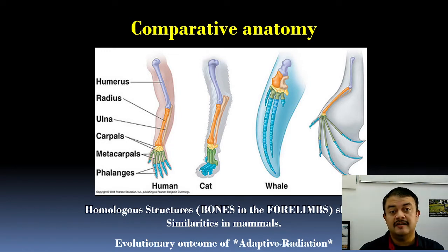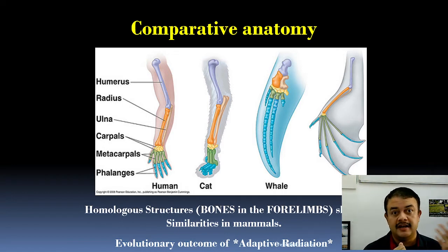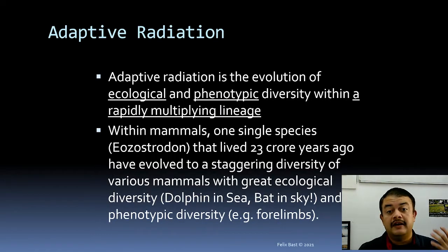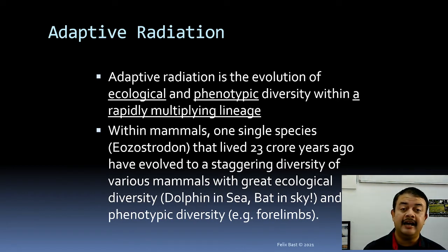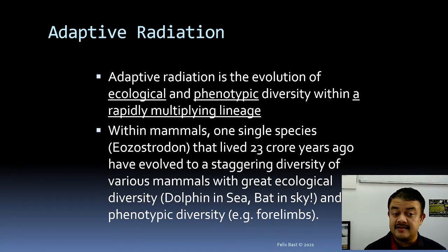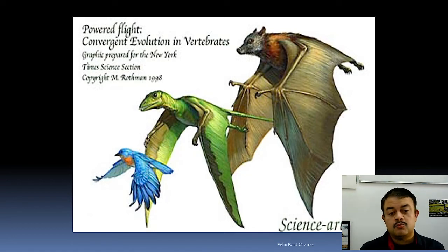In comparative anatomy we look for homologous structures and distinguish them from analogous structures. For example, the bones of four limbs across all vertebrates show similarities in mammals — this is because of adaptive radiation: the splitting into completely different morphological forms in a very short period due to changing environments. Adaptive radiation means the evolution of ecological and phenotypic diversity within a rapidly multiplying lineage. The single species Eomaia lived around 230 million years ago and evolved the staggering diversity of mammals — from dolphins in the sea to bats in the sky.